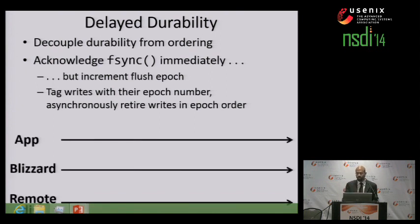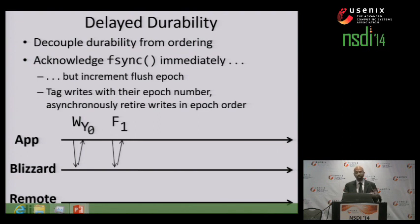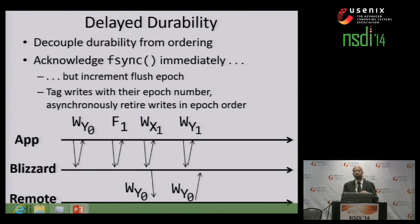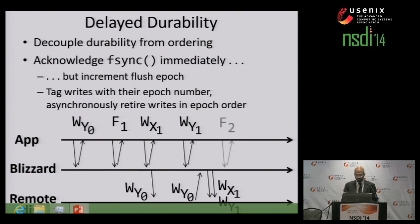Here's an example with a client application, a Blizzard virtual drive, and a remote disk. The application issues the first write to block Y, and Blizzard acknowledges that write to the application immediately, even though no write has been issued to the actual remote storage. The application issues a flush operation, and Blizzard acknowledges that flush immediately as well, incrementing the flush epoch by one. The application issues a write to block X — acknowledged immediately. Blizzard then decides to issue that first write to Y to the backing remote storage. Meanwhile, the client issues another write to Y. Blizzard learns that the first write to Y has become durable. Since Blizzard retires writes in epoch order, all writes in epoch zero have completed, so Blizzard is free to issue all writes from epoch one.